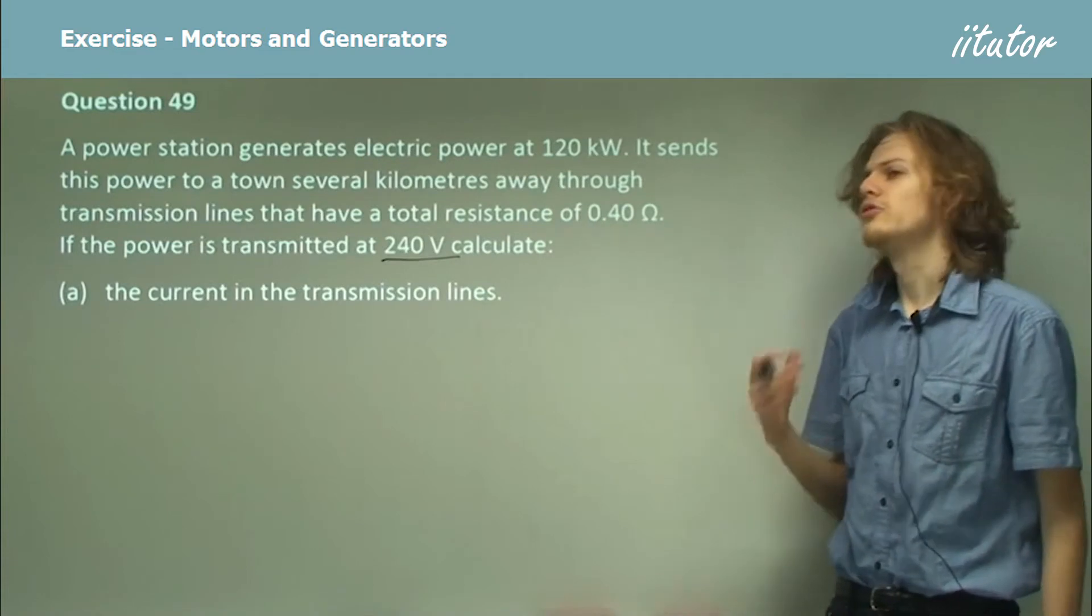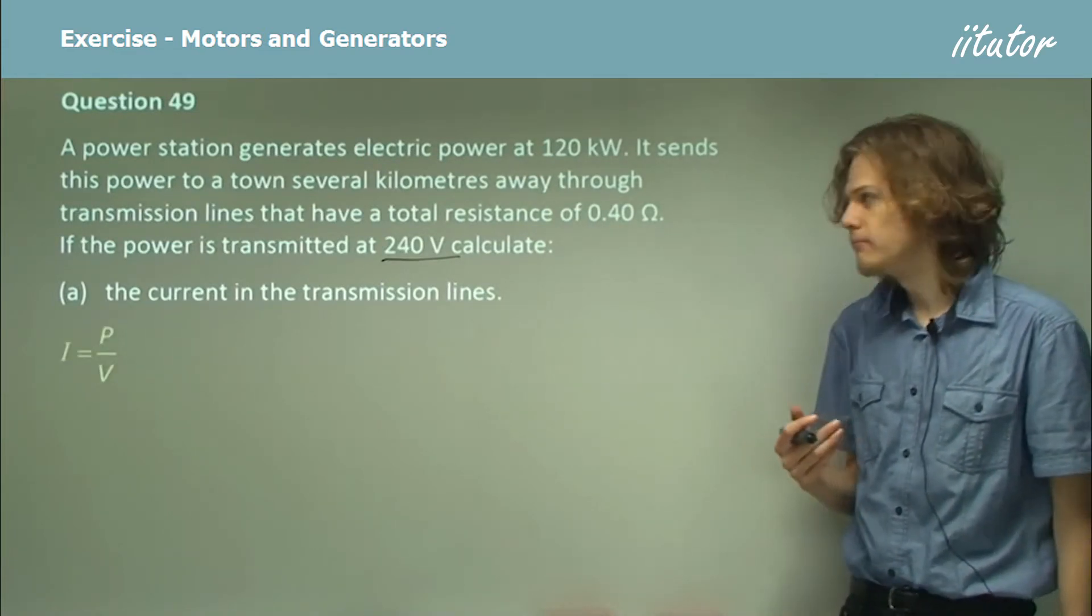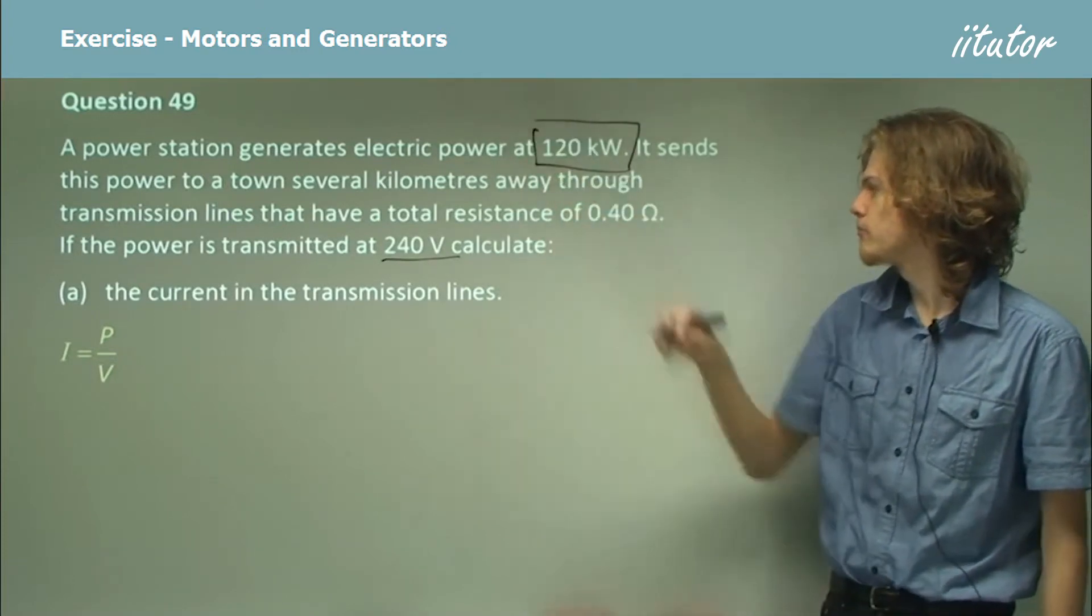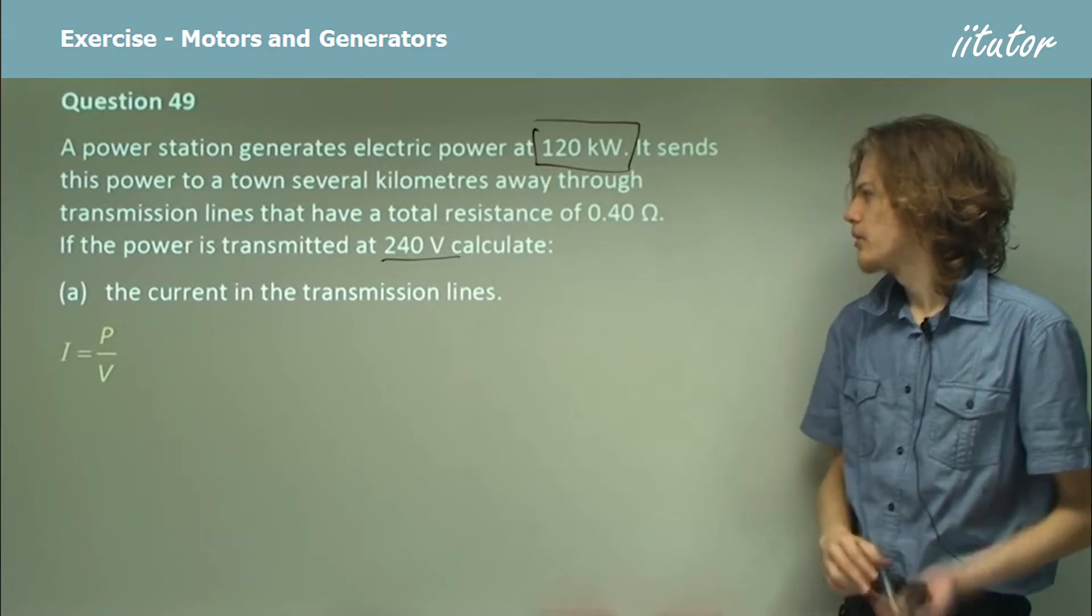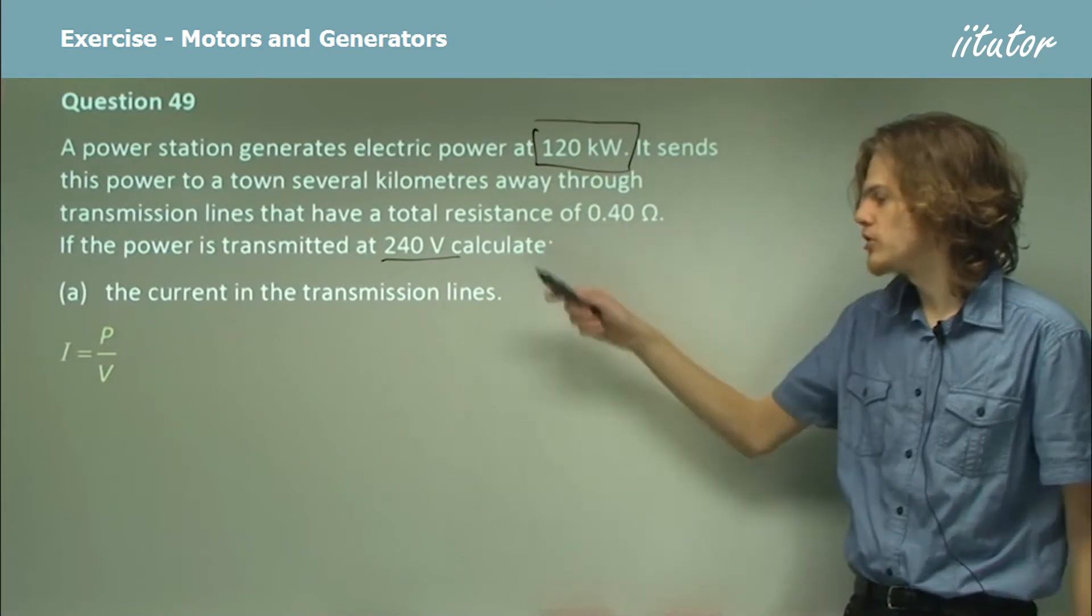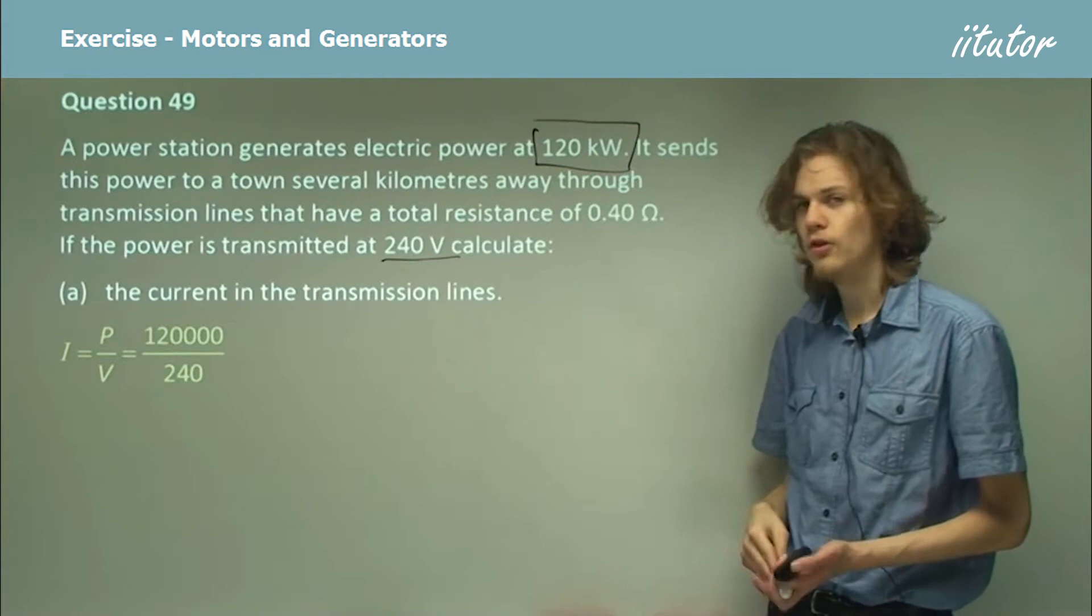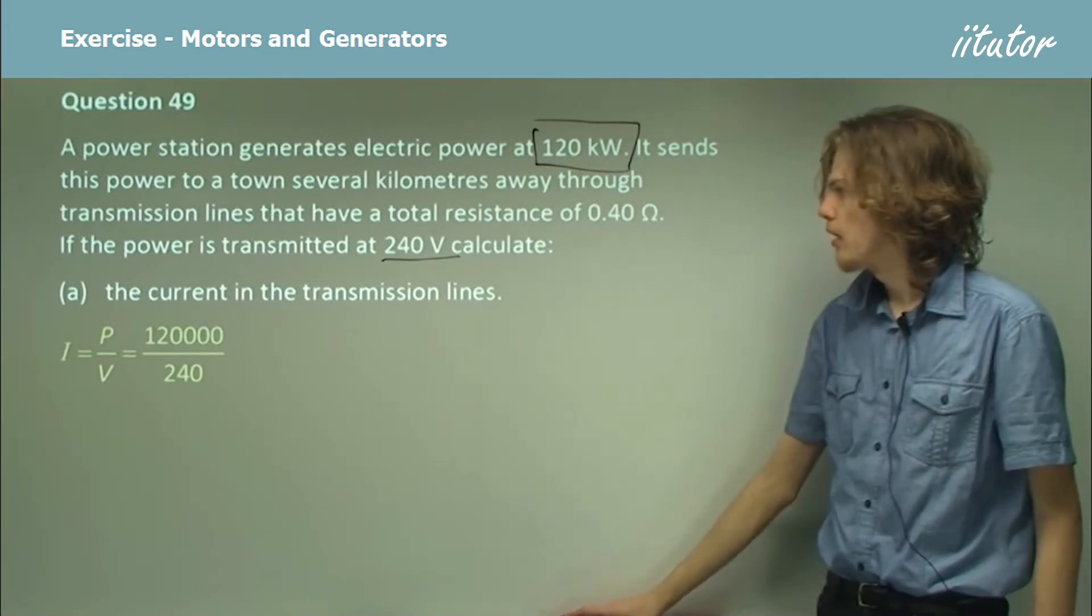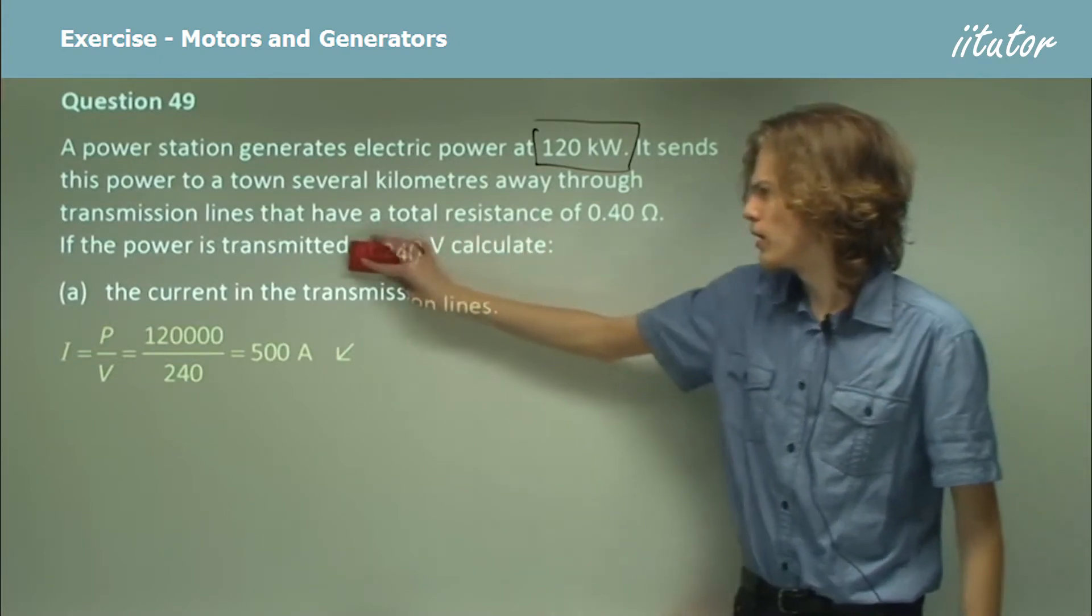So here we'll be using just our regular equation, I equals P over V. We know our power is 120 kilowatts. We know the voltage as well. So our current will be power over voltage. Substitute those in, 120,000 over 240 because we have to turn the kilowatts into watts. And that will evaluate to 500 amperes, which is quite a large current.